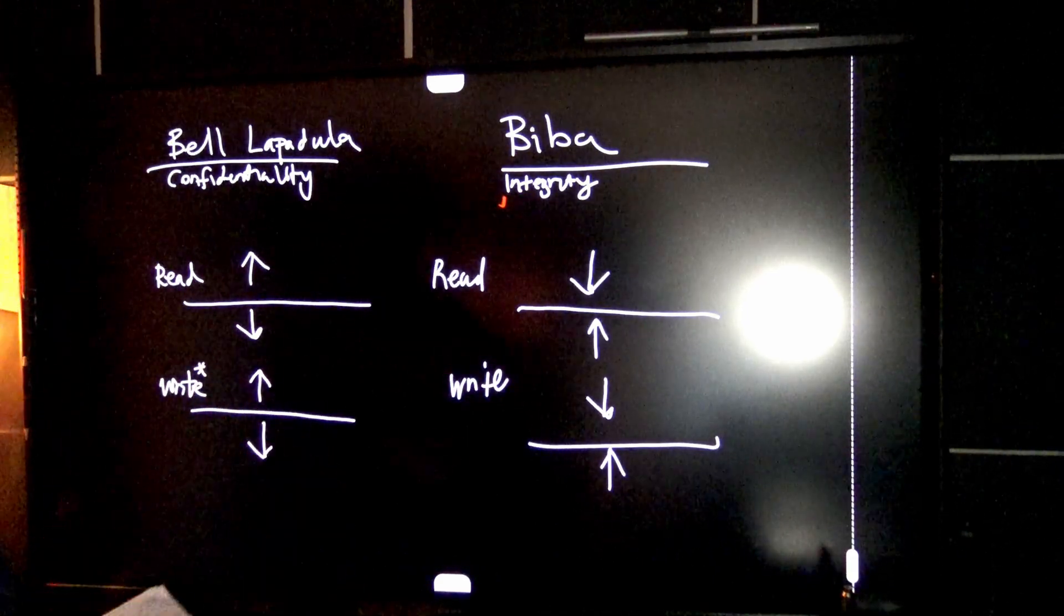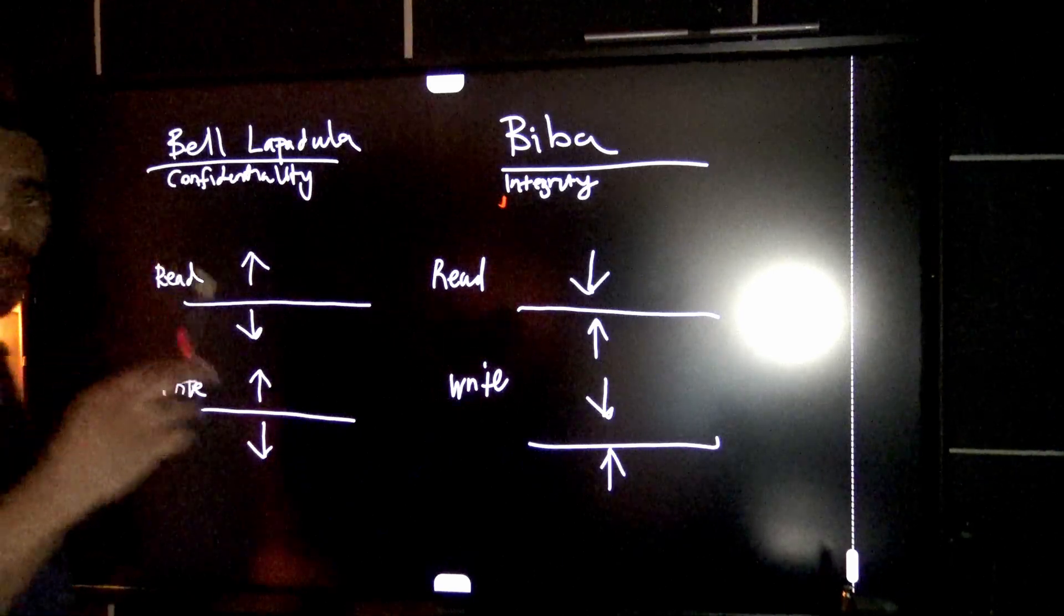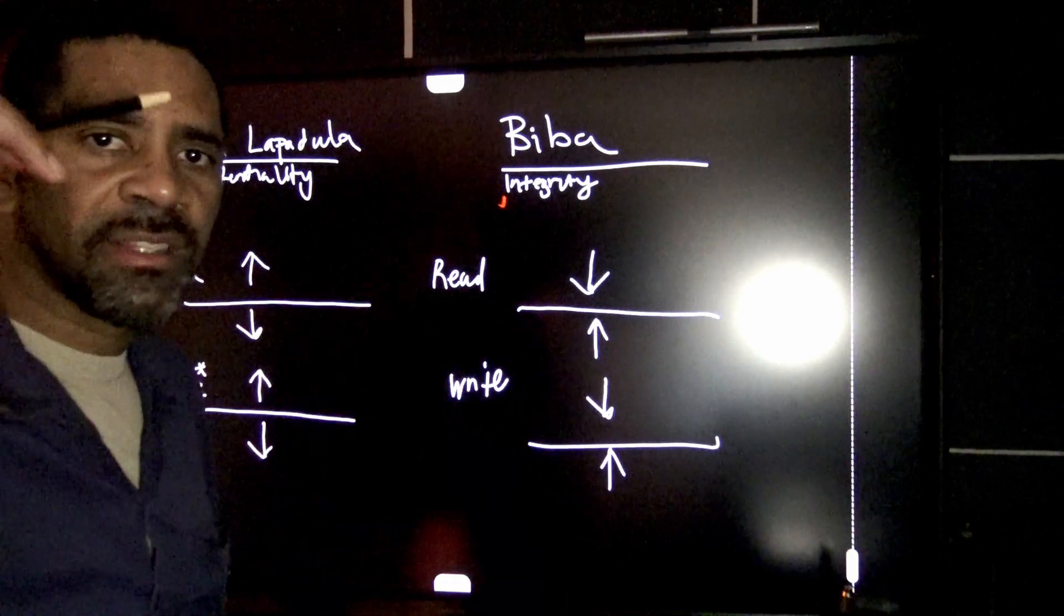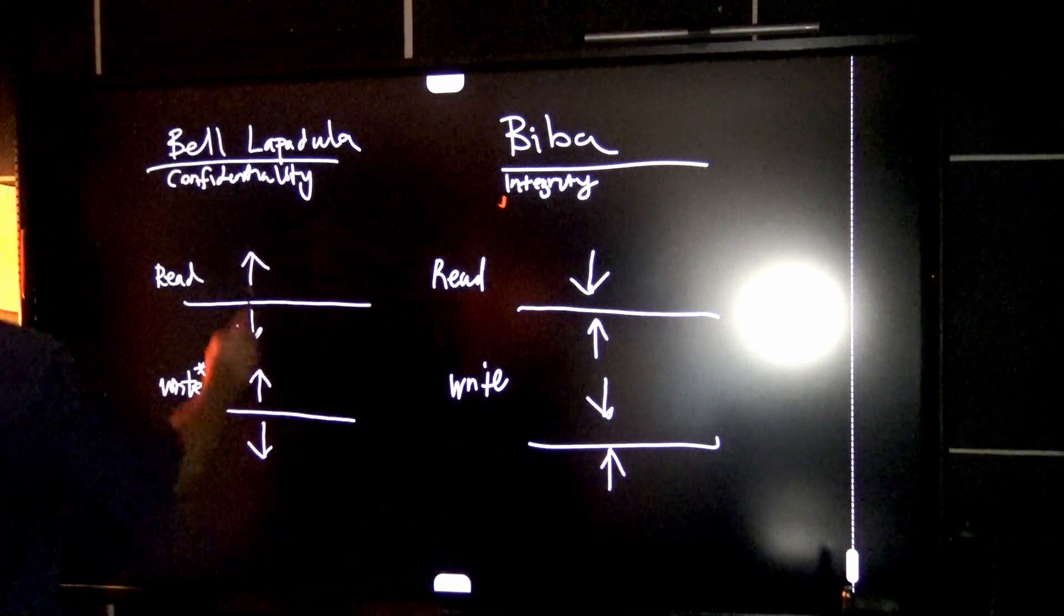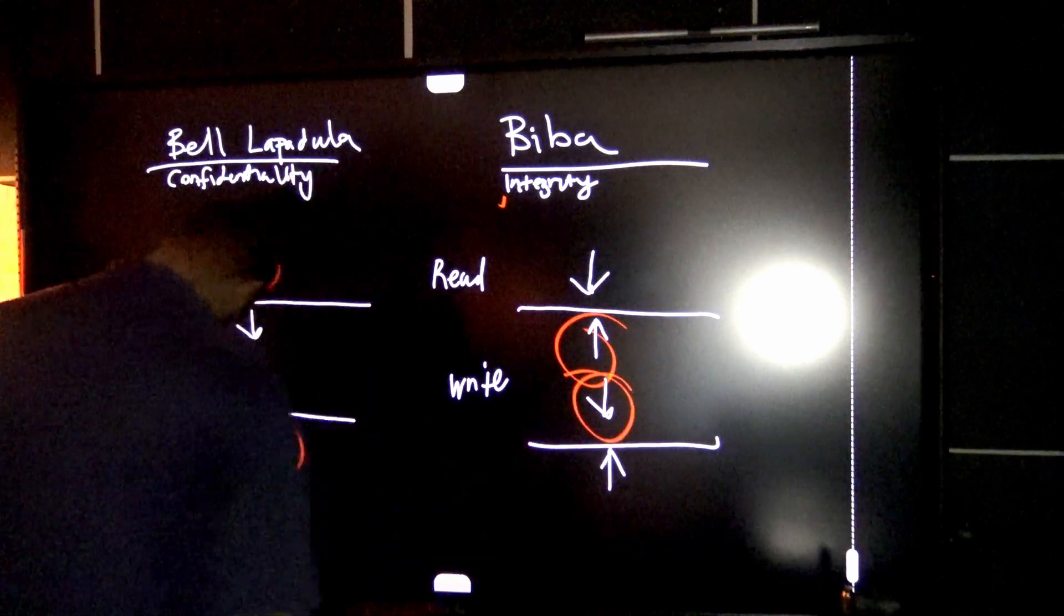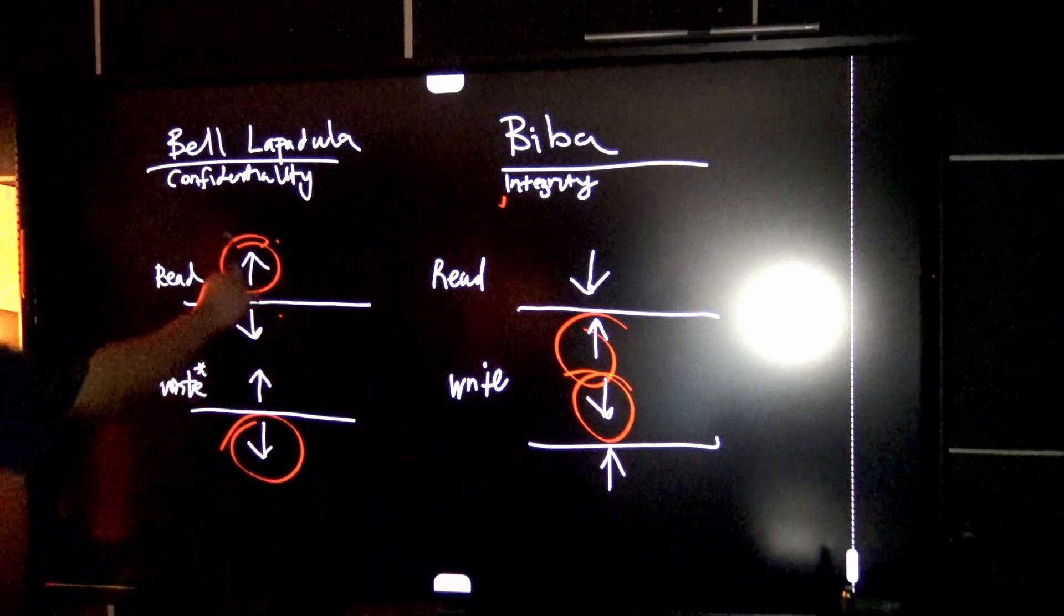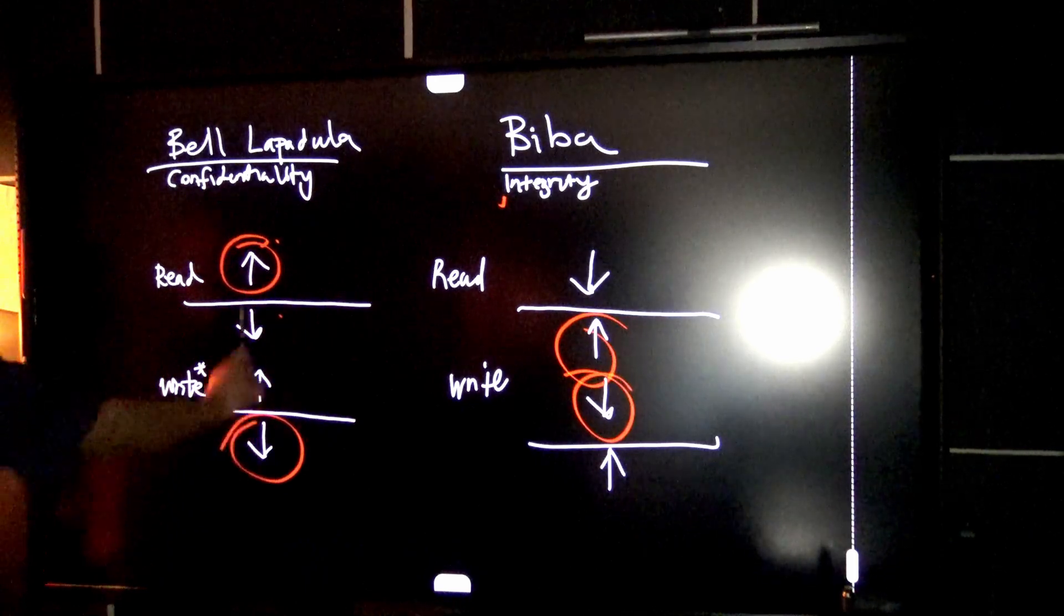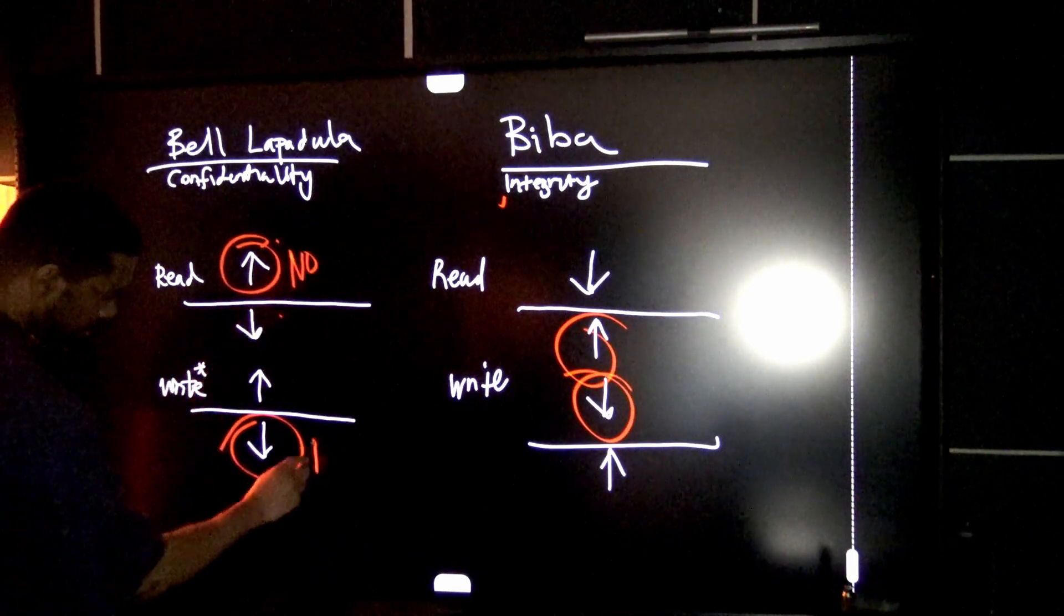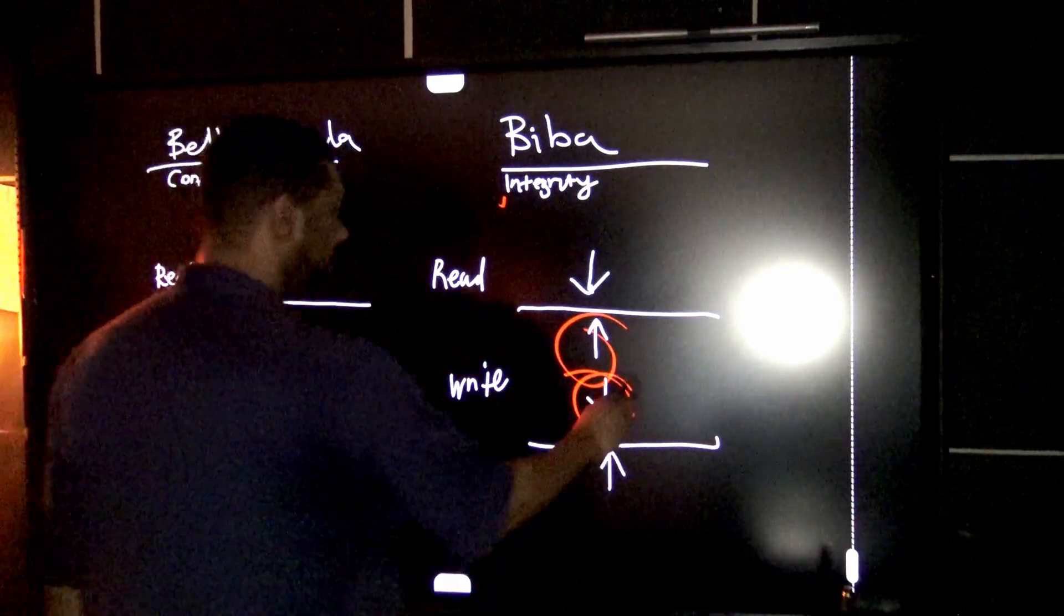Now that we got this done, now it's time to talk about the disallowed part. We can't do this, we can't do this, and we can't do this, and we can't do that. That's it. What we are saying here is that we cannot read up. No, let's put no's on all these.